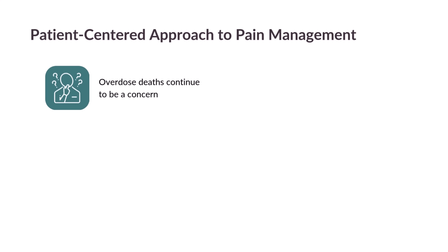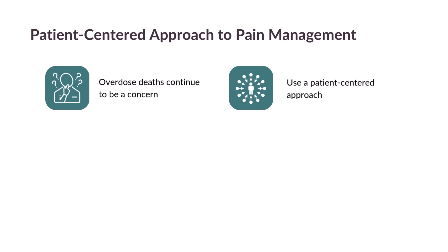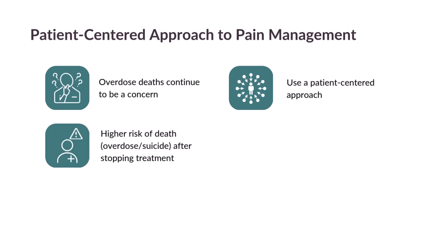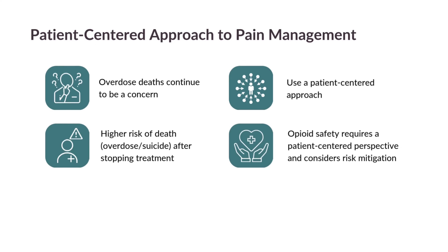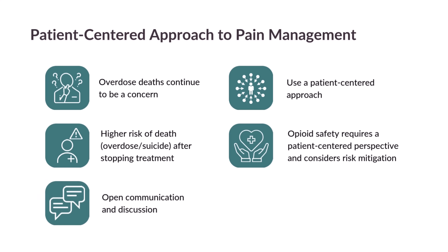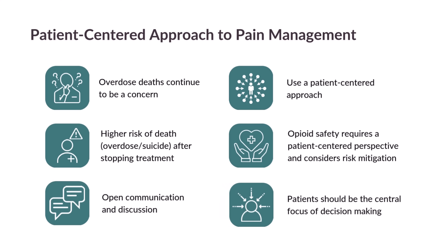It is important that clinicians use a patient-centered approach to patients struggling with opioids. A VA study showed that patients were at higher risk of overdose and suicide death after stopping opioid treatment. This risk increased the longer an individual had been treated with opioids prior to stopping. Opioid safety efforts involve taking a broader patient safety perspective and consider risk mitigation. These efforts also include open communication and discussion with our patient in treatment planning and having our patient as the central focus of treatment decision-making.